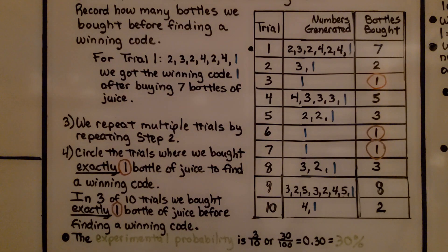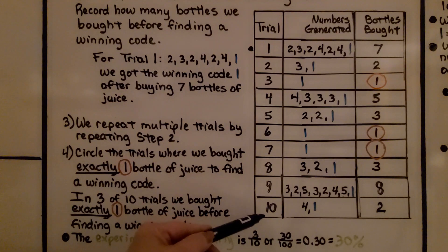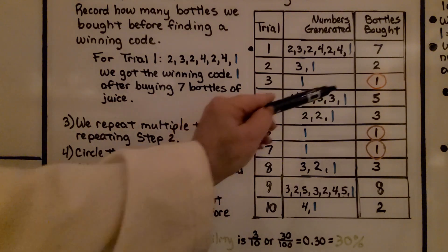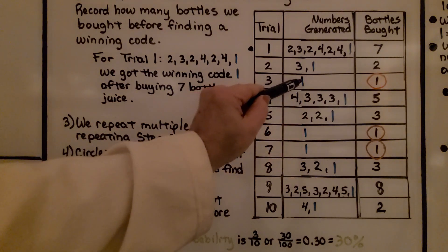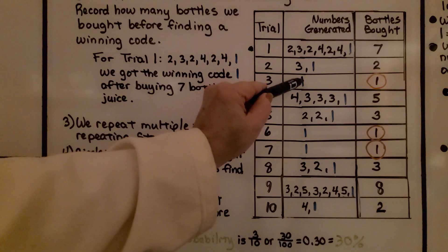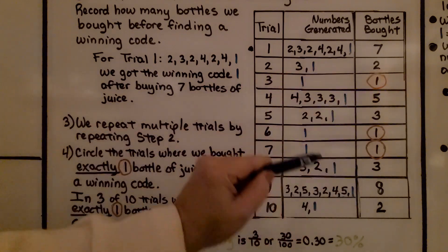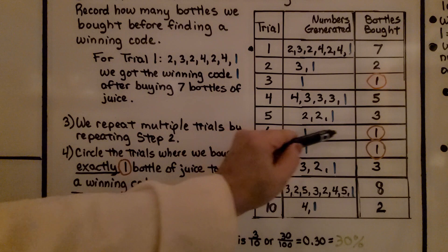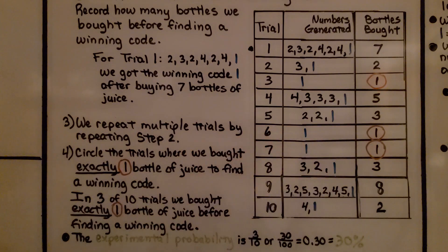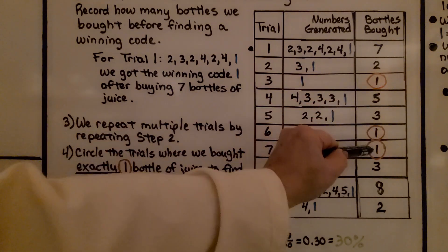I could have done it for more. I did it for 10. And we can see here I only got a 1 right away. So that's 1 bottle bought. Here's another where I got 1 right away and another. Here, we circle the trials where we bought exactly 1 bottle of juice to find a winning code. So we have this one, this one, and this one.